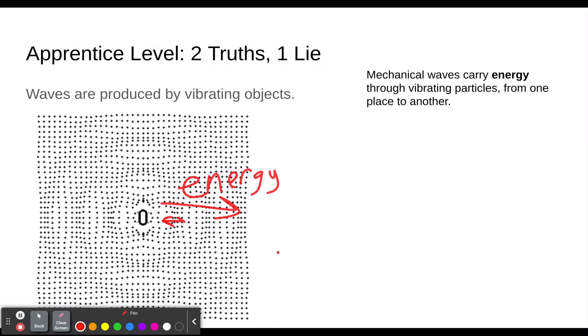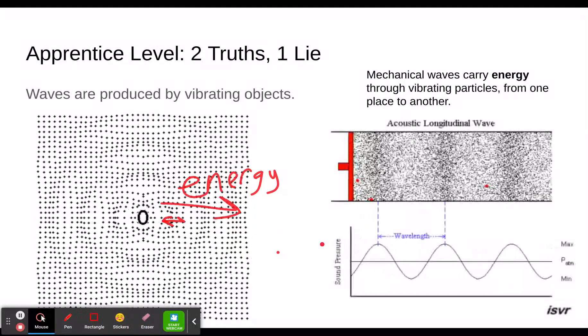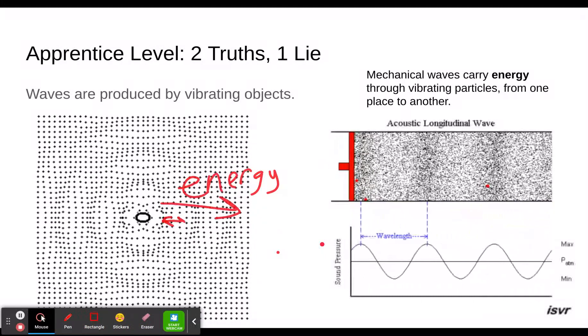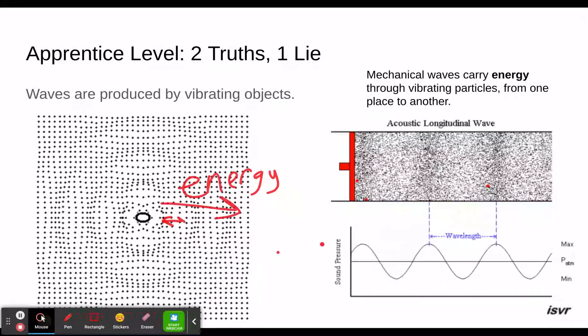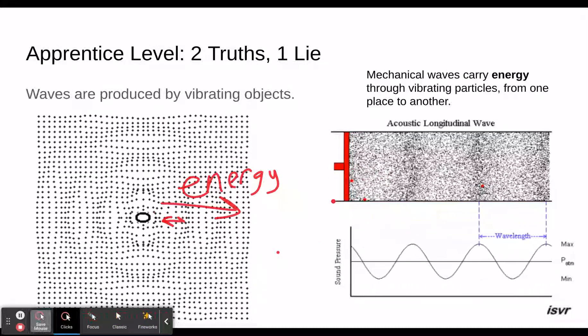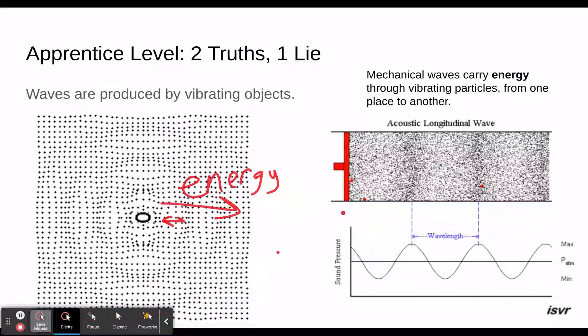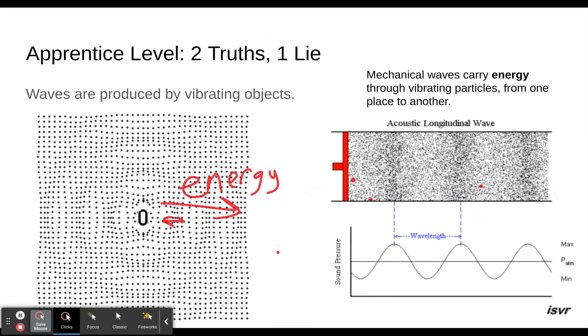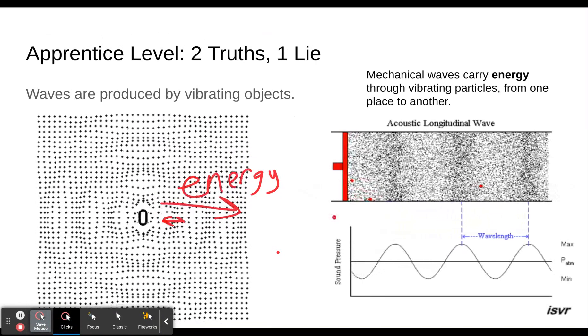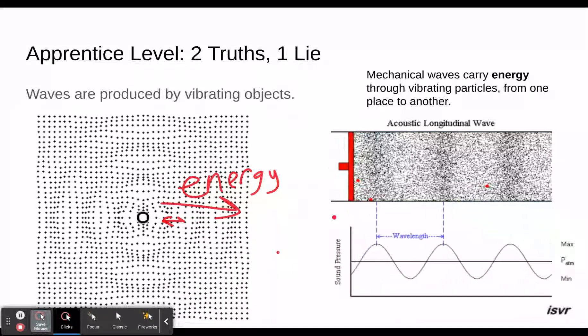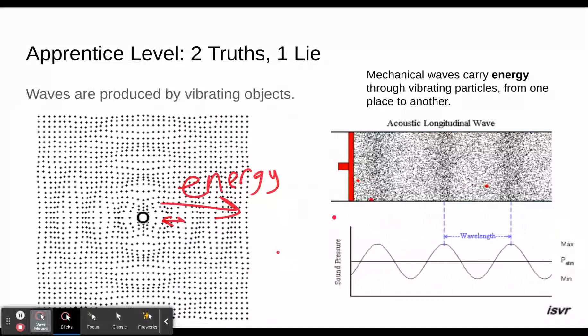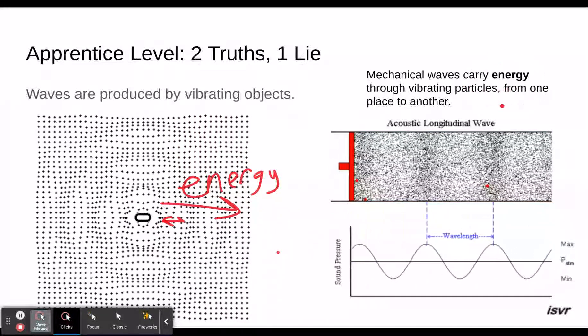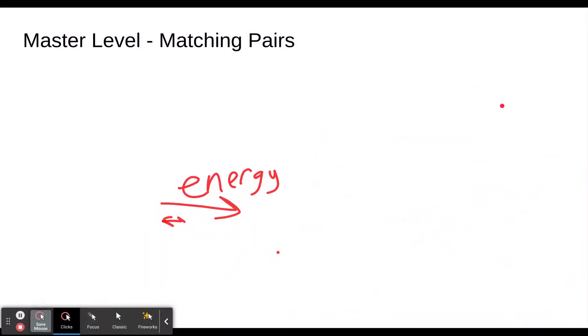Here we have a longitudinal wave. Once again you can see the particles moving back and forth with the vibrating object pushing. We got a couple red objects here that can show you the particles are just moving back and forth. Notice those red particles and all the black ones don't actually move from left to right. Once again, it's just the energy carrying them there.